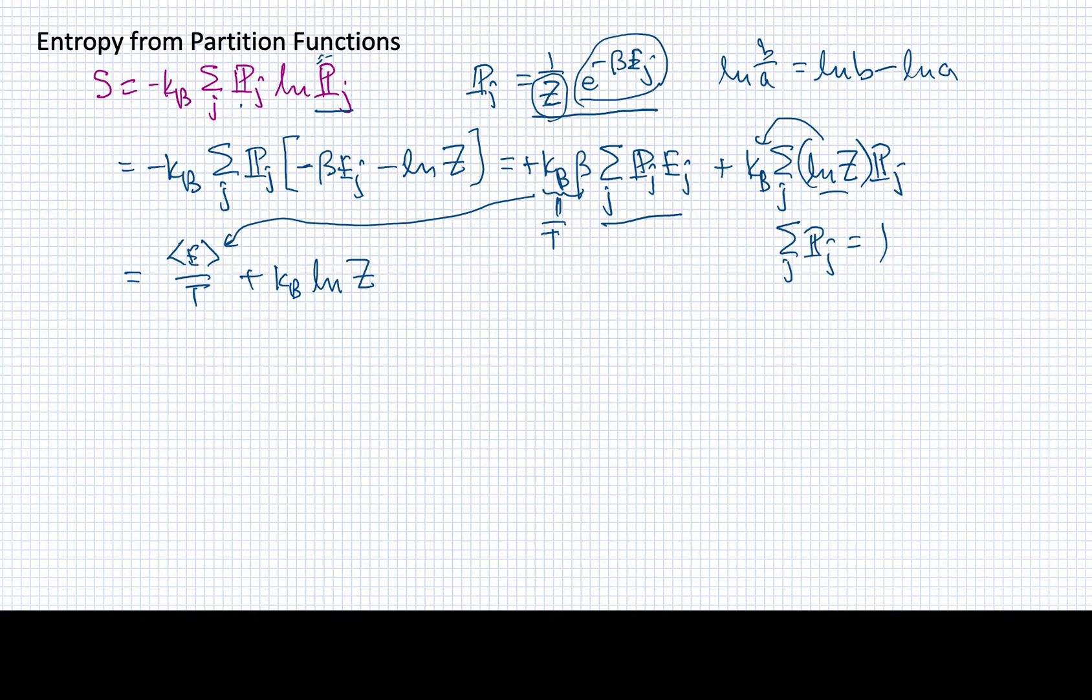I have here an expression that tells me exactly how the entropy depends upon the partition function for this system. It looks like a fairly simple formulation. I could improve on it by writing the average energy as minus d log beta of log z.